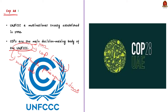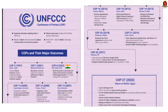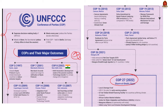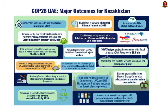Looking at major outcomes of COP meetings over the years: COP27, held in 2022 in Egypt, established the Loss and Damage Fund, stressed a USD 3.1 billion plan for an early warning system, and accepted new initiatives like the African Carbon Market and Action for Water Adaptation and Resilience.